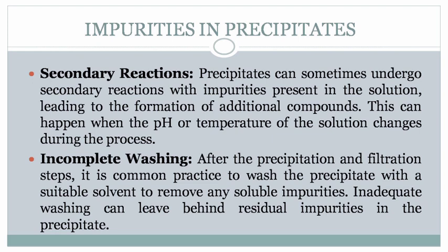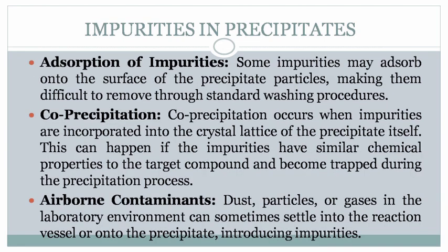Fifth, incomplete washing. After the precipitation and filtration steps, it is common practice to wash the precipitate with a suitable solvent to remove any soluble impurities. Inadequate washing can leave behind residual impurities in the precipitate. Sixth, absorption of impurities. Some impurities may adsorb onto the surface of the precipitate particles, making them difficult to remove through standard washing procedures. Seventh, coprecipitation. Coprecipitation occurs when impurities are incorporated into the crystal lattice of the precipitate itself. This can happen if the impurities have similar chemical properties to the target compound and become trapped during the precipitation process.